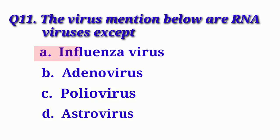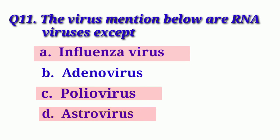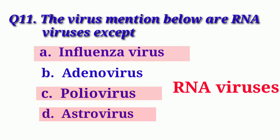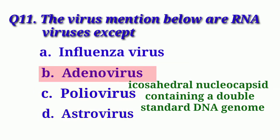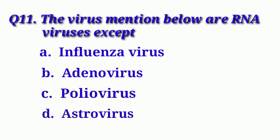Influenza virus, poliovirus, and astrovirus are RNA viruses. But adenovirus has an icosahedral nucleocapsid containing a double-stranded DNA genome. So our correct option is Option B: Adenovirus.